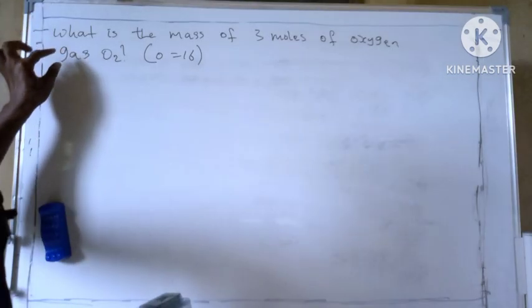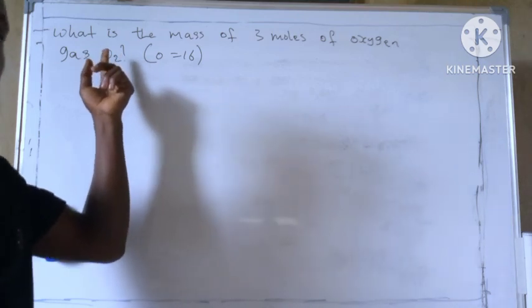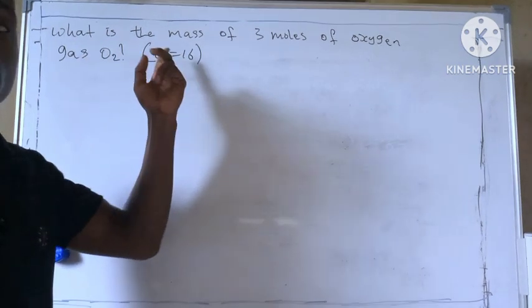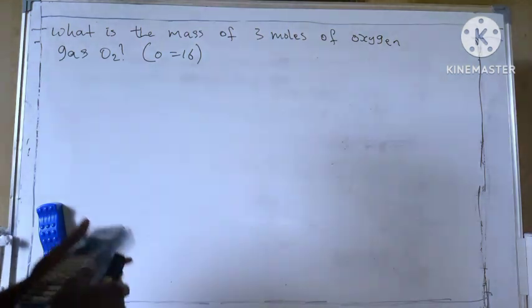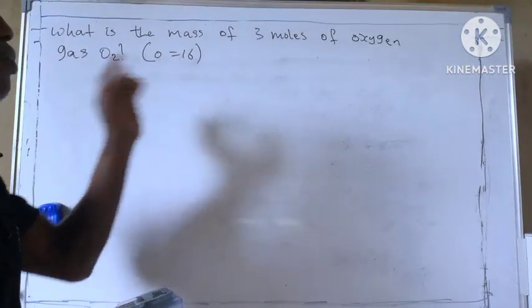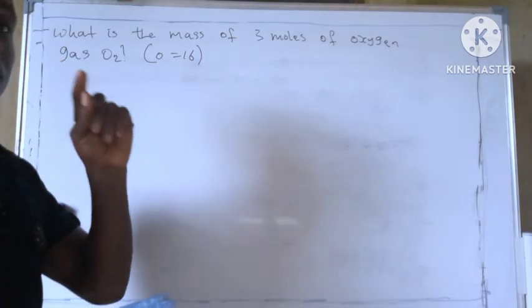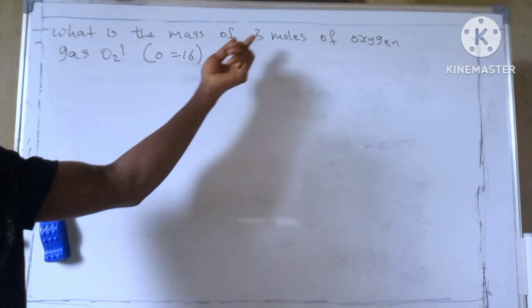So of oxygen gas, we have two atoms of oxygen here and the atomic mass of oxygen is given as 16. We are asked to calculate the mass of three moles of oxygen. So first of all we need to calculate the mass of one mole of oxygen, then we multiply it by this three moles.